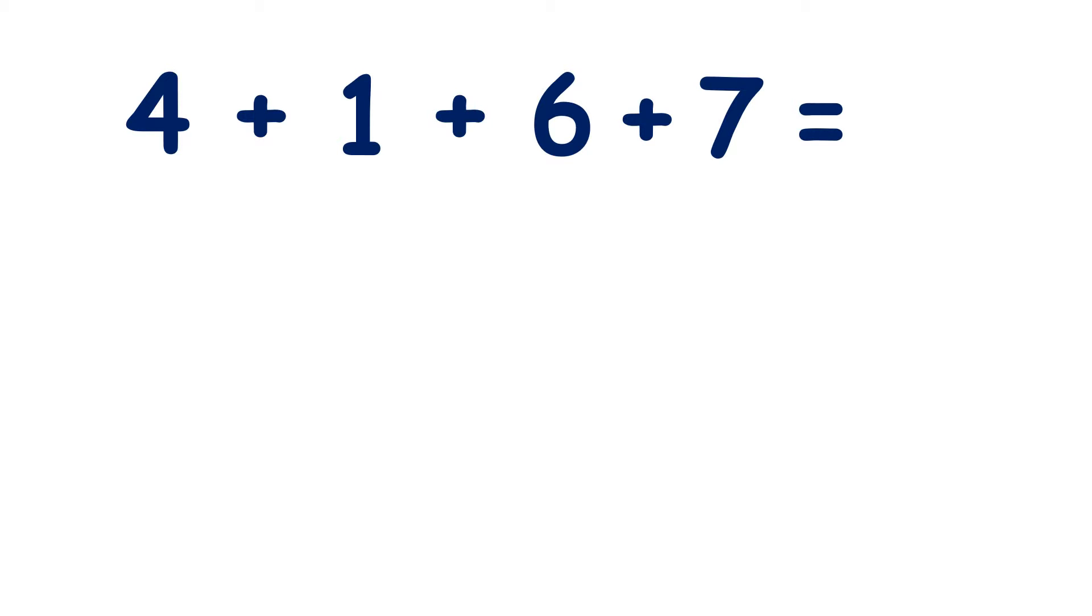Now we have 4 numbers: 4, 1, 6 and 7. But I've noticed that 2 of these numbers make a number bond to 10. Which 2 numbers here can make a number bond to 10? Well 6 and 4 make 10. So here I'm not starting with the largest number. I'm starting with the 2 numbers that make a number bond to 10.